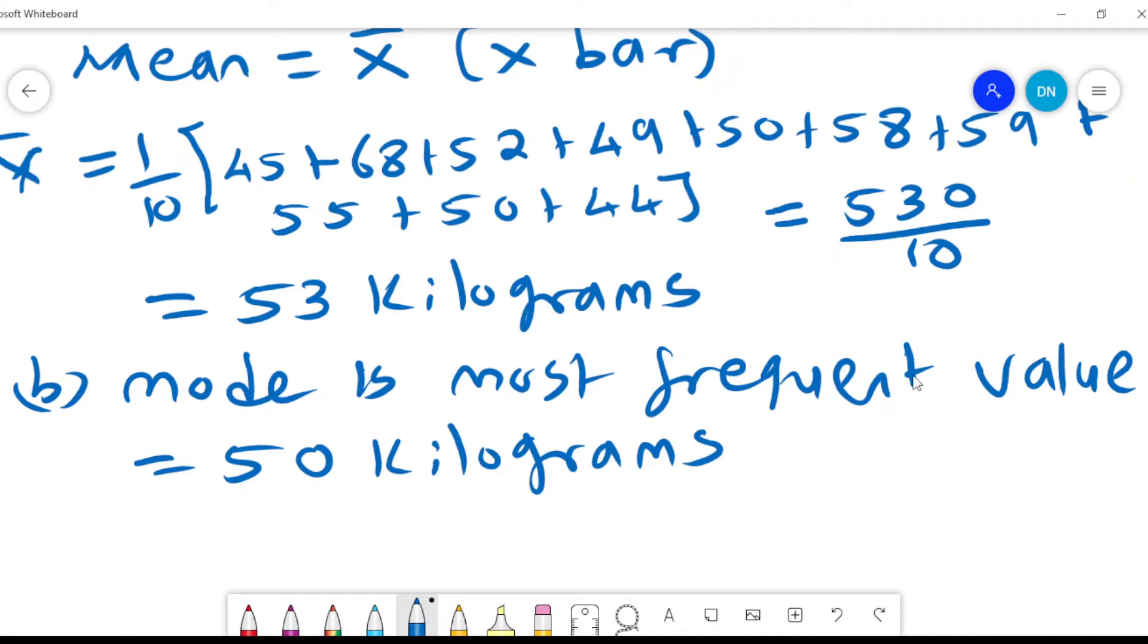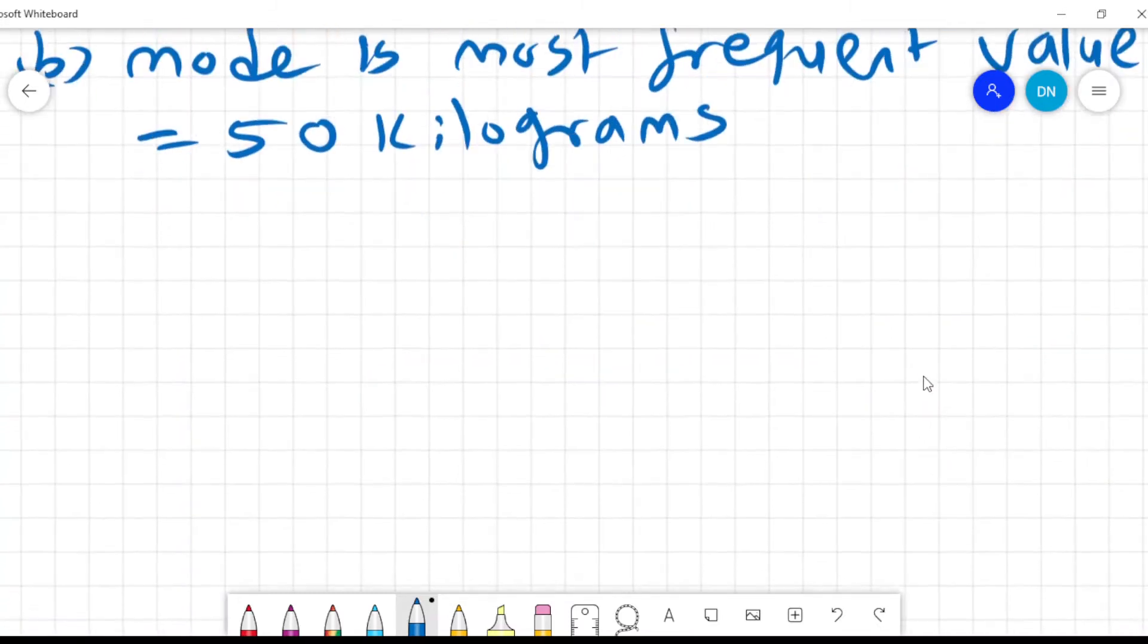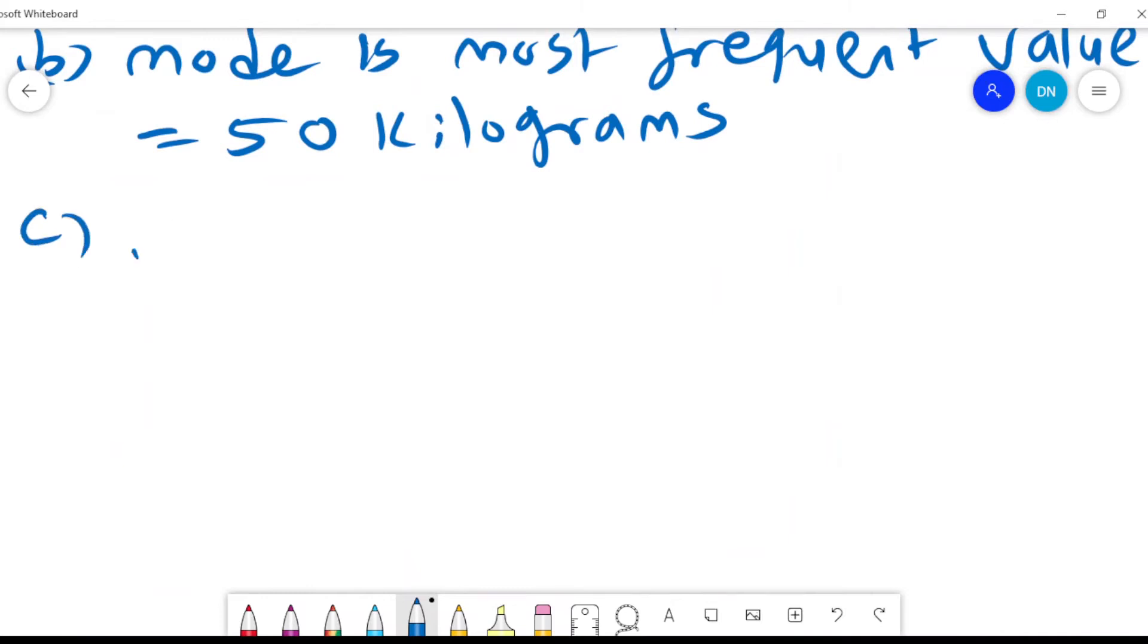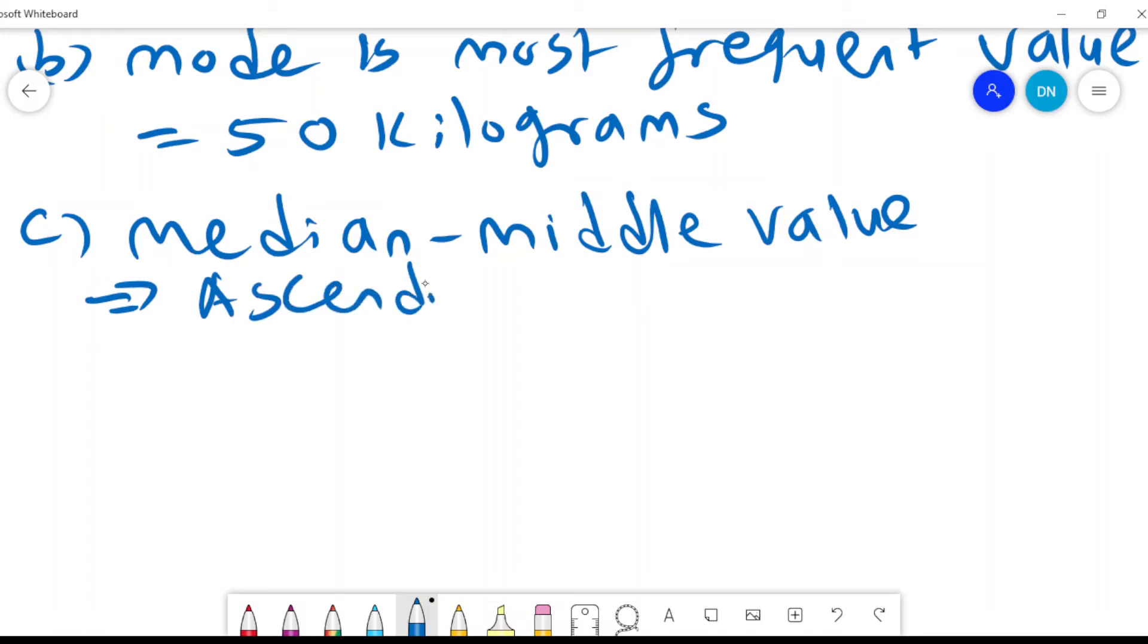And the last value that we want to compute for the ungrouped data is what we call the median. And the median is the mid-value. And so how do we get the mid-value? We organize our data in ascending manner or ascending form or ascending order. And so we have 44, 45, 49, 50. We also have another 50 there.